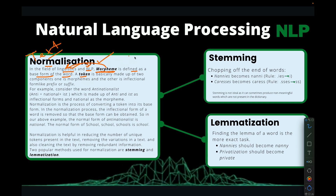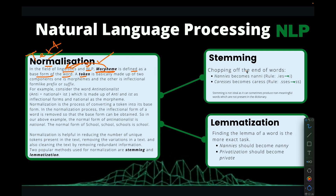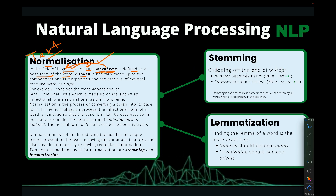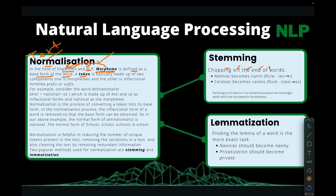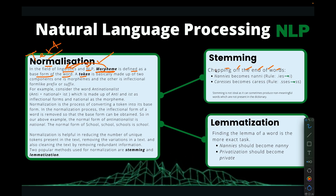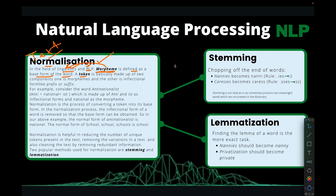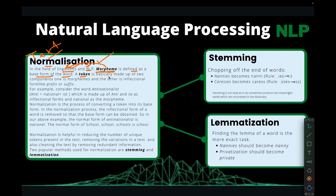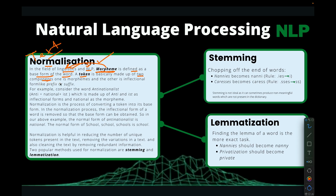A token is an individual word. For instance, for a sentence like 'chopping off the end of west', if we find the tokens, they are going to be: chopping, off, the, end, of, and west. That's what we've learned so far — that's the whole meaning of a token.